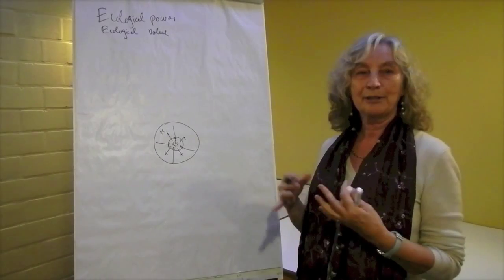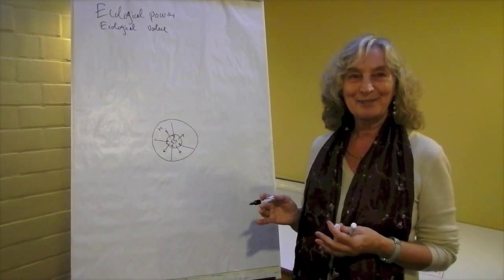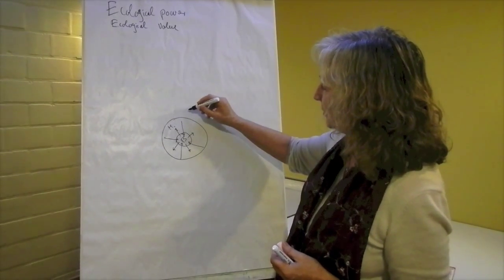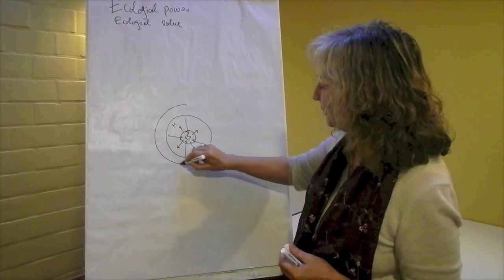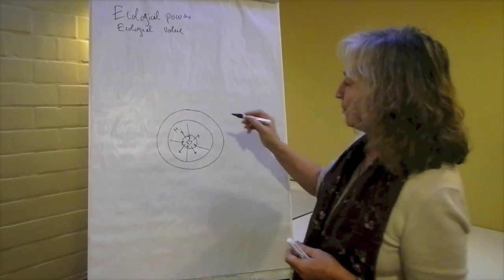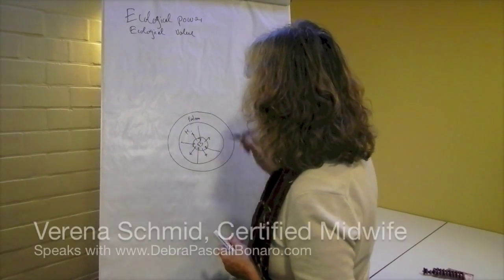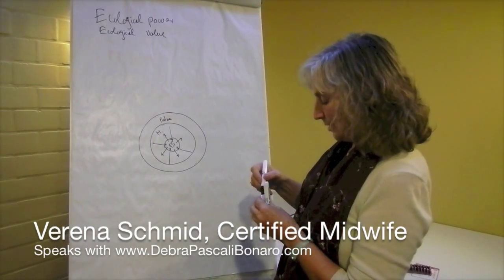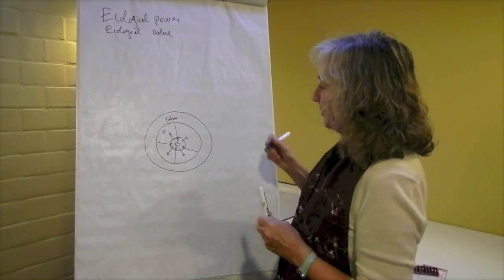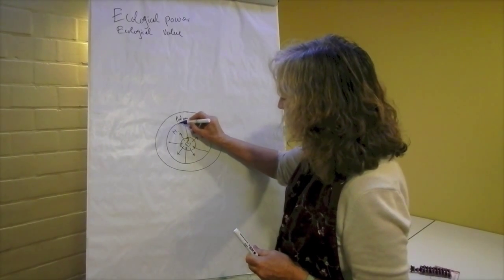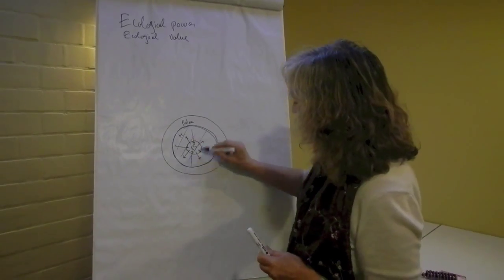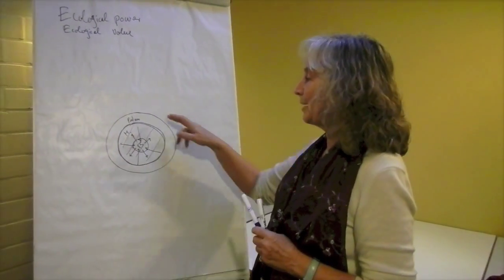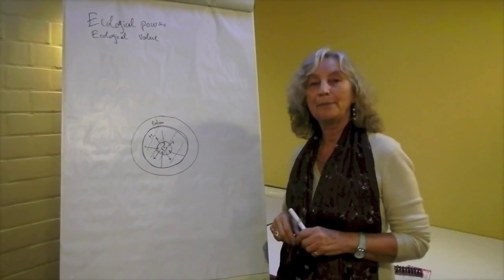And this is what our society accepts now, but the woman is not alone with this responsibility. There is another circle around of ecological power, usually the partner, man or woman. The mother-baby unit becomes the ecological value of the partner, and the partner is the ecological power of the mother-baby unit.